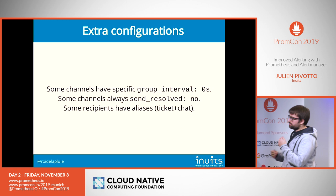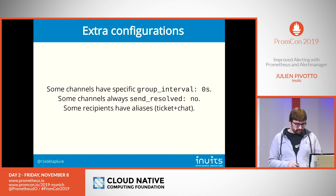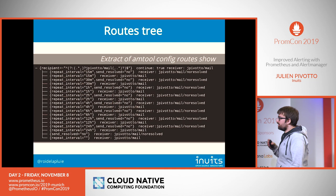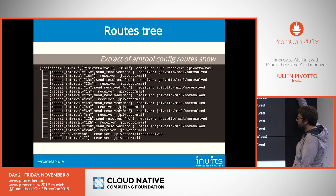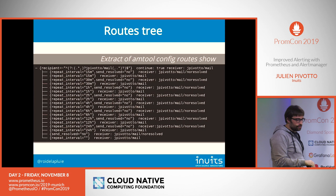At the end, that is what the routing tree looks like. It looks quite complicated. But if you look, we first go to 'jpvoto/mail', then we look for repeat interval and send_resolve combinations, and so on. We continue through each level like this.